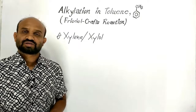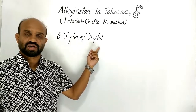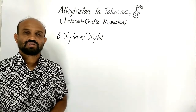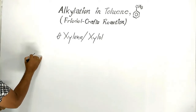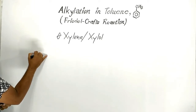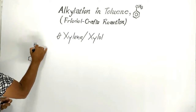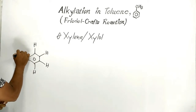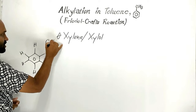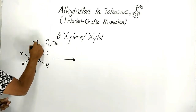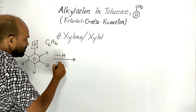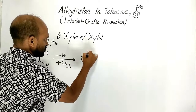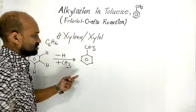Let's learn about xylene or xylol — these two words are the same. This is benzene, where each carbon atom carries one hydrogen atom, that is C6H6. When one hydrogen atom is replaced by a methyl group, we get toluene.